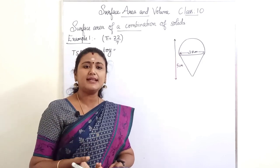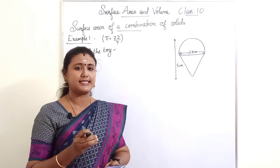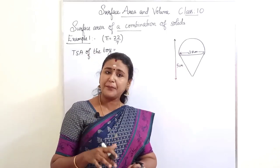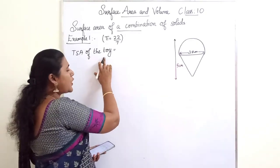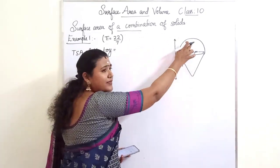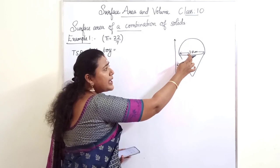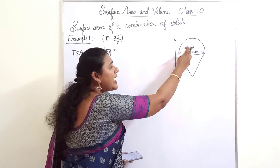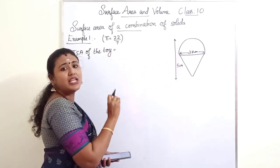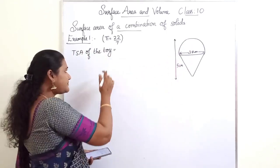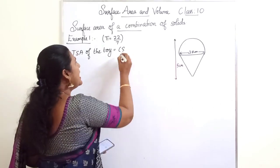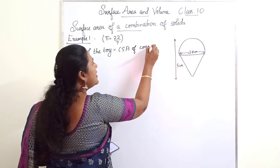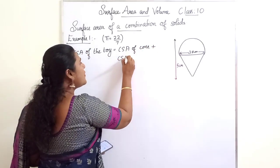The area of the top to be colored equals the TSA of this toy. TSA is the area of the surface exposed to space — the area we can touch or paint. Here we have a combination of cone and hemisphere, so we find the TSA of the toy by adding the CSA of the cone and the CSA of the hemisphere.